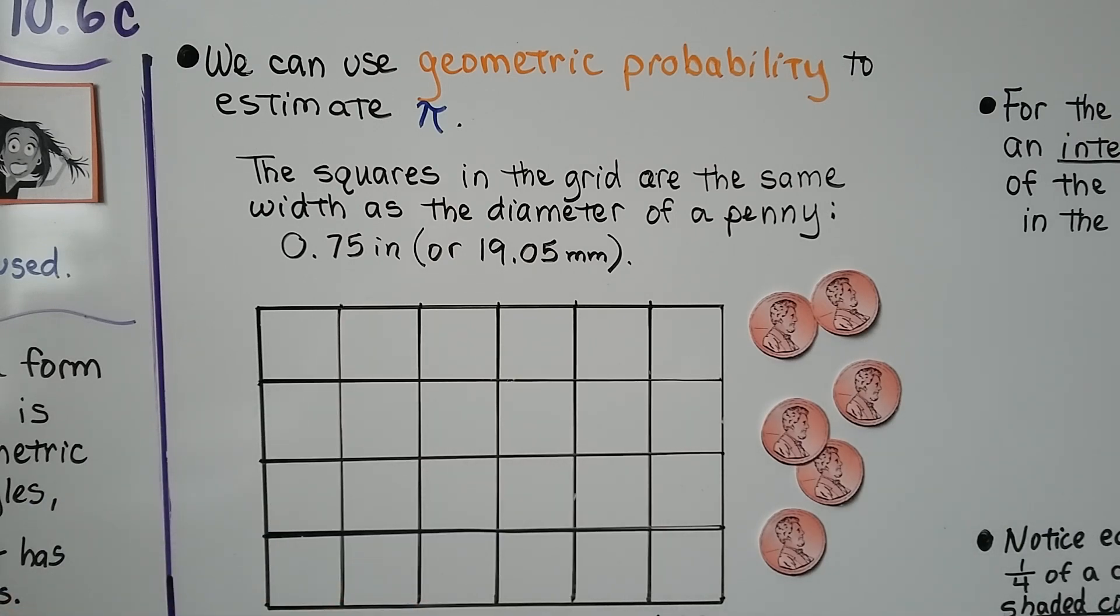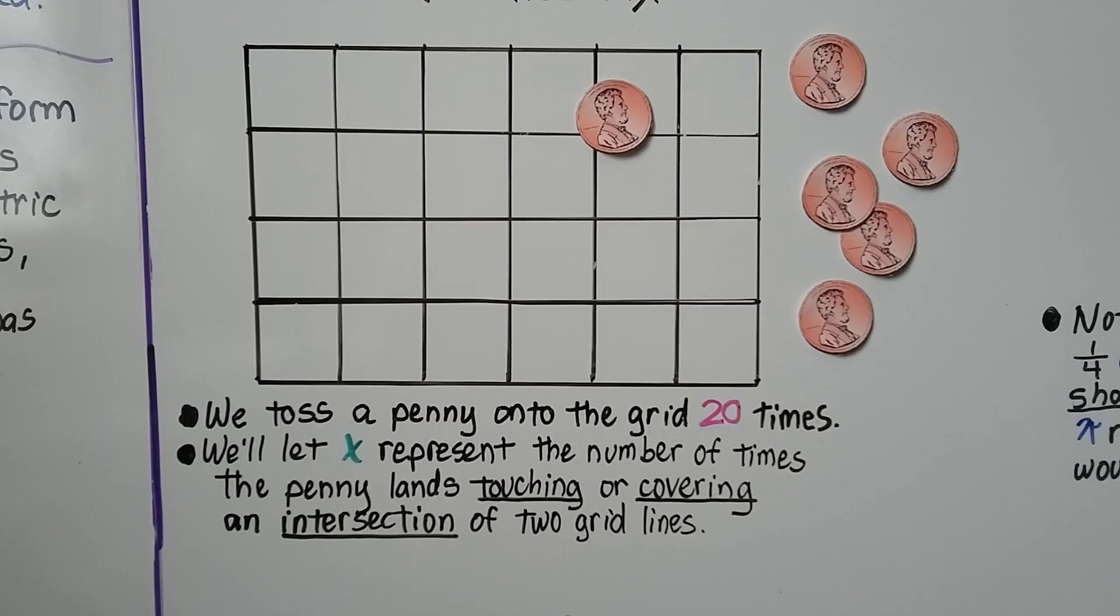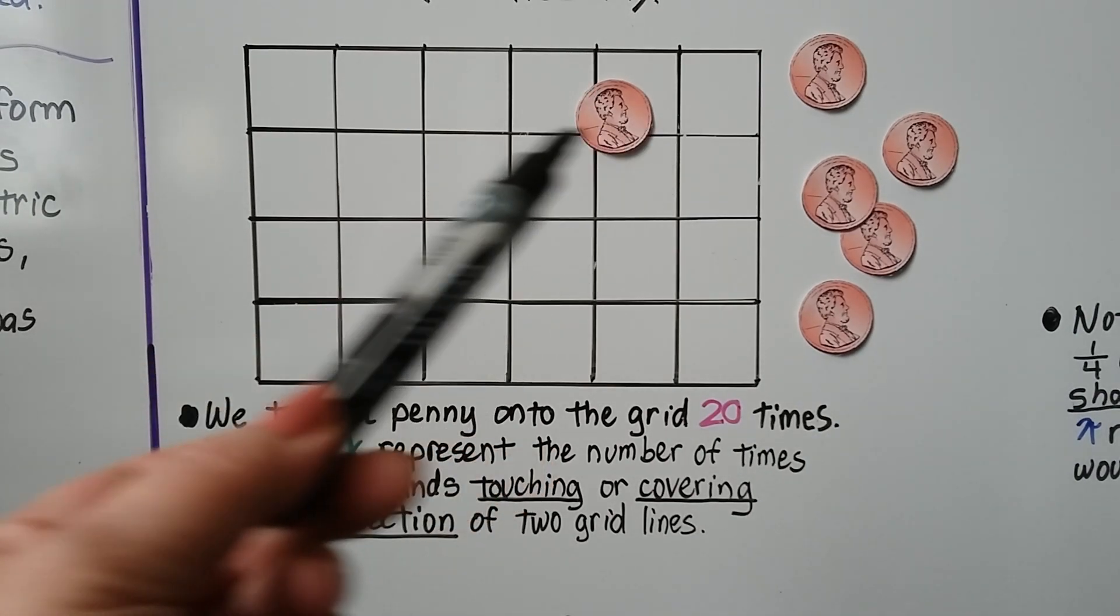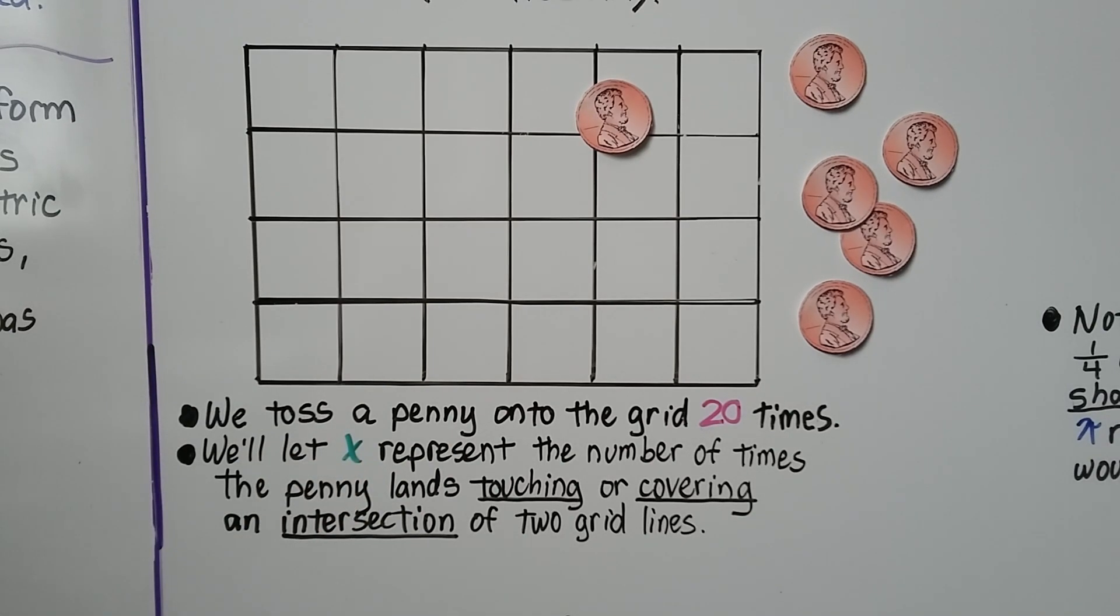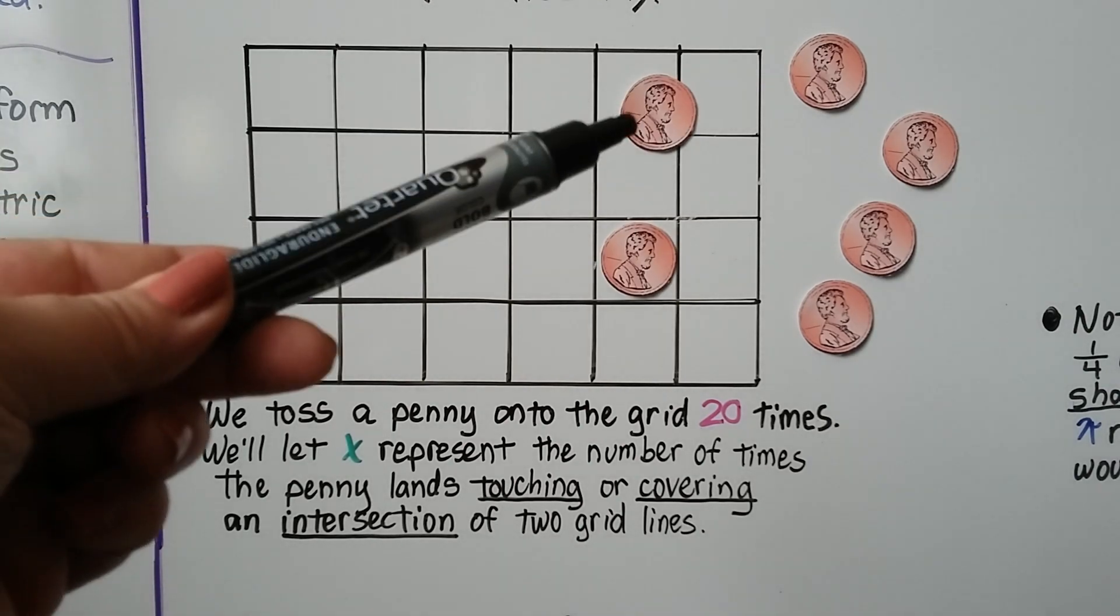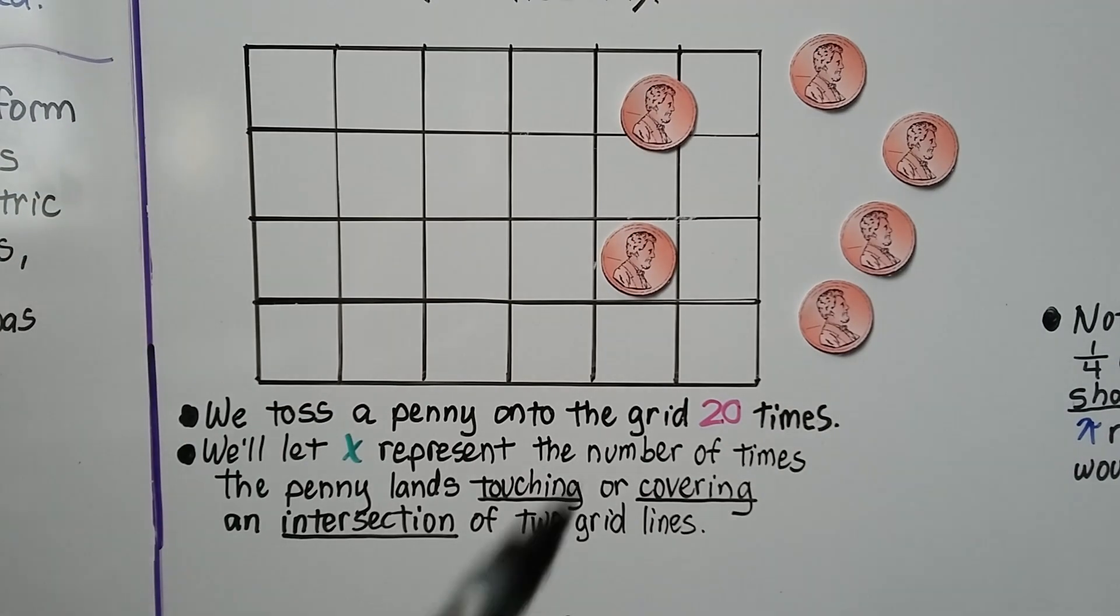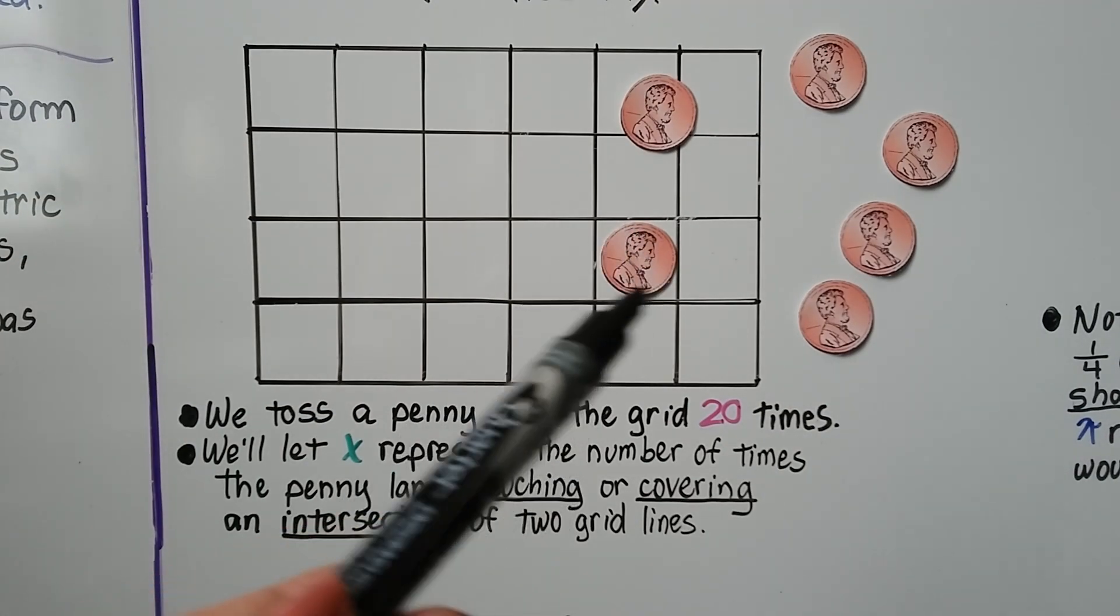I'm going to toss a penny onto this grid. We toss a penny onto the grid 20 times. We're going to let x represent the number of times the penny lands touching or covering an intersection of two grid lines. So this penny is touching or covering this intersection right here. I'm going to pick it up and throw it again. We're going to do that a total of 20 times. So the penny on the top would count because it's touching or covering an intersection. This one would not count because it's not touching or covering an intersection.